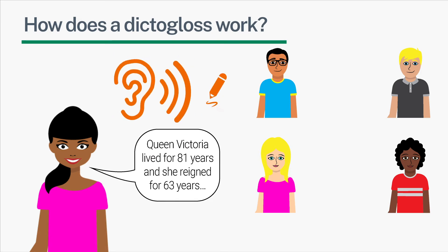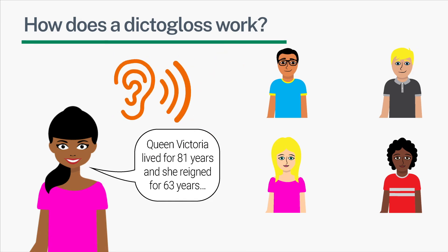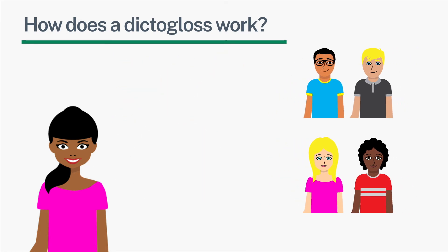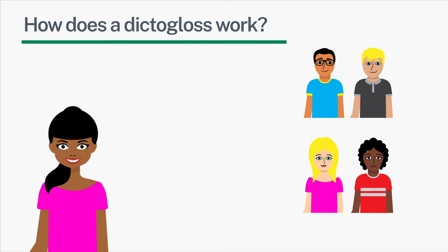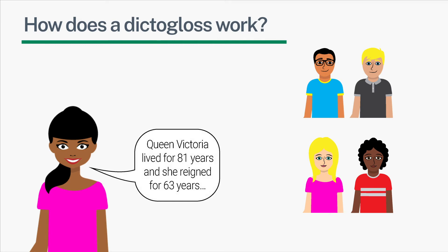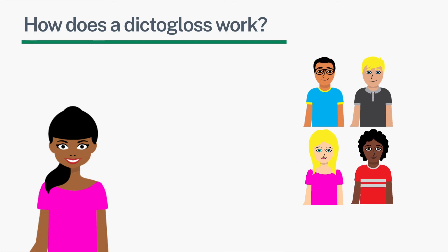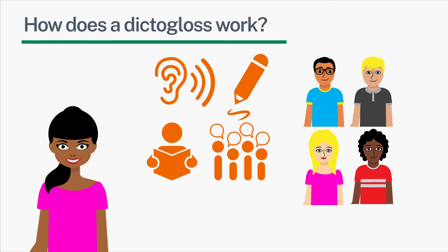Learners listen and take notes again. After that, the learners form pairs and share their notes comparing with each other. The teacher then reads the text for a third and final time at normal speed. Finally, the learner pairs form groups of four to produce a final written version of the text as close to the original as possible.